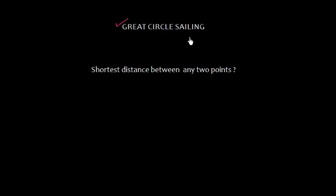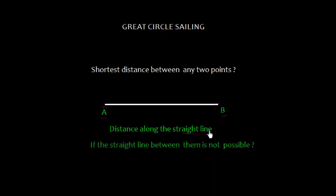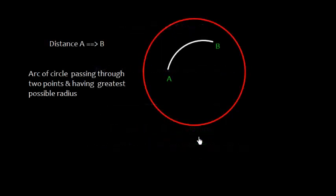In this video I'm going to discuss great circle sailing. We need to know what is the shortest distance between any two given points. These are two points, point A and point B. If they are on a plane surface, the shortest distance will be the distance along the straight line. However, if these two points are on a sphere, the distance from A to B will be the arc of a circle passing through these two points.